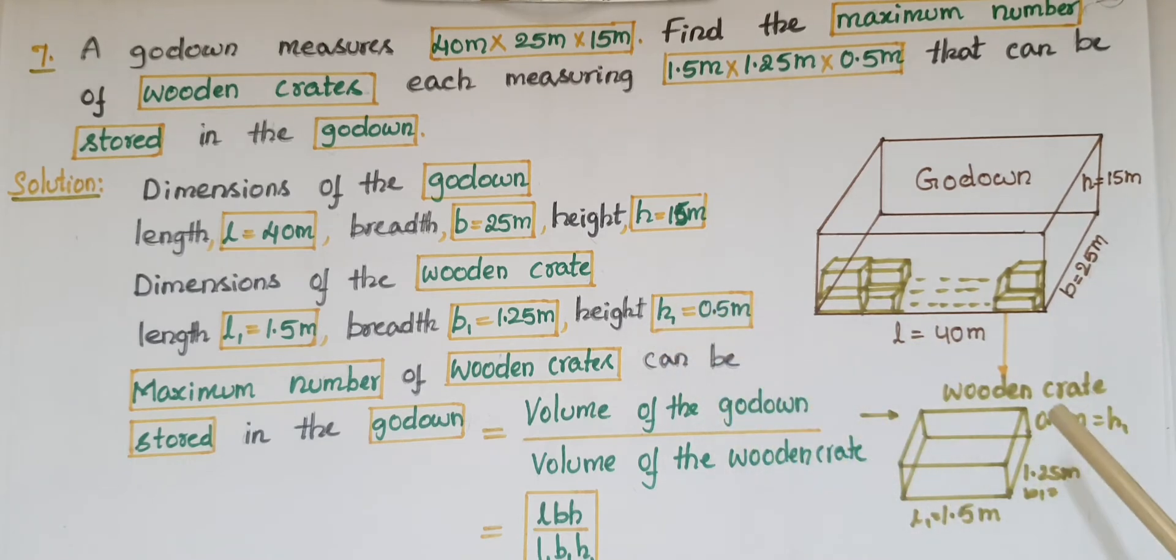Here we have to find the maximum number of wooden crates that can be stored in the godown. If you divide the volume of the godown by the volume of the wooden crate, then you will get the maximum number of wooden crates that can be stored in the godown.